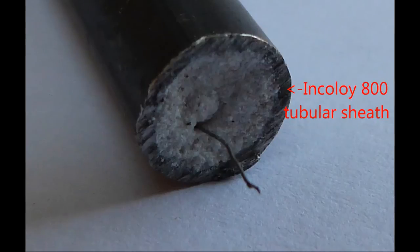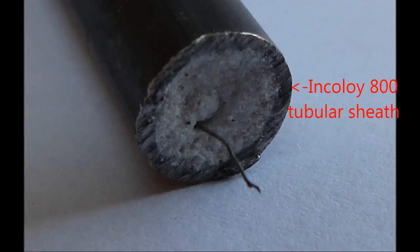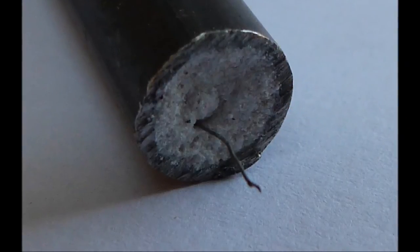Sheath materials vary, but our example is an Incoloy 800 tube, a type of stainless steel.